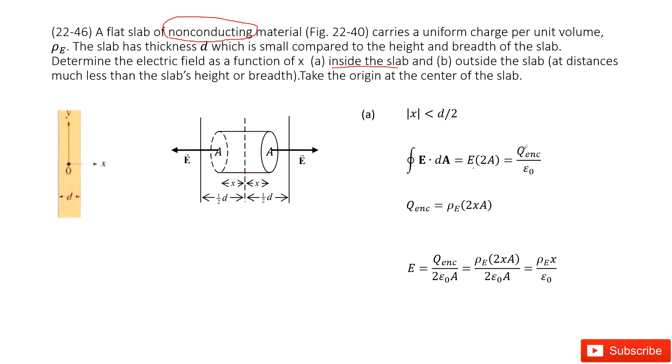equals to enclosed charge divided by epsilon naught. And the enclosed charge is charge density times the volume. So 2 times A times x, because the length is just 2 times x. This is times the cross-sectional area A.